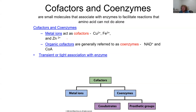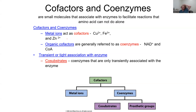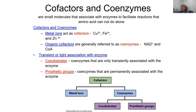There are coenzymes that only transiently associate with an enzyme, known as co-substrates, and those that are permanently associated, known as prosthetic groups. Heme is a good example of a prosthetic group — it's organic and gives a protein the ability to bind a metal ion. So a coenzyme is either a prosthetic group (permanently associated) or a co-substrate (transiently associated).